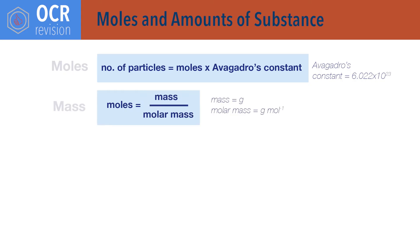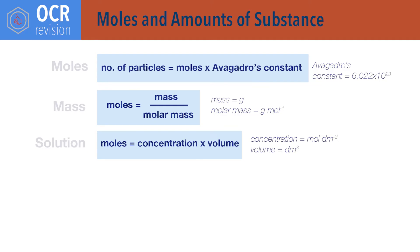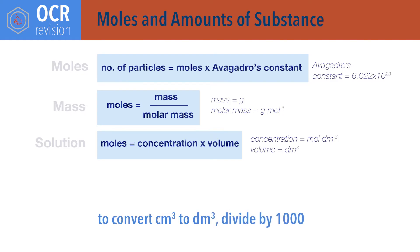Moles equals mass divided by molar mass. Note that the units for mass must be grams and molar mass grams per mole. Moles equals concentration times volume. Note that the units for concentration are usually moles per decimetre cubed, and volume should also be in decimetres cubed. To convert the more common volume unit of centimetres cubed to decimetres cubed, divide by 1000.